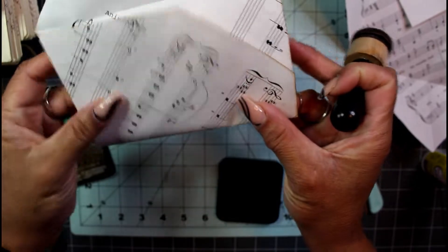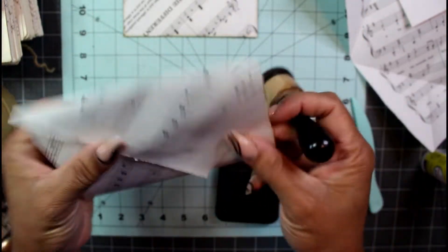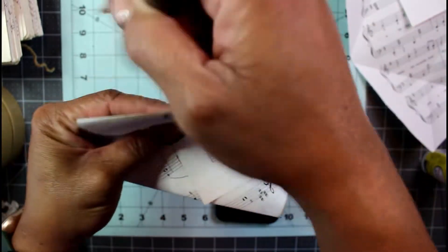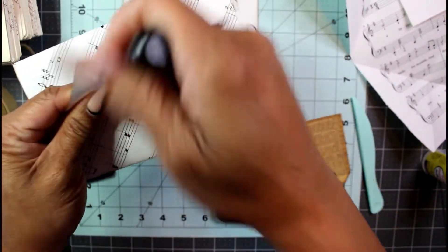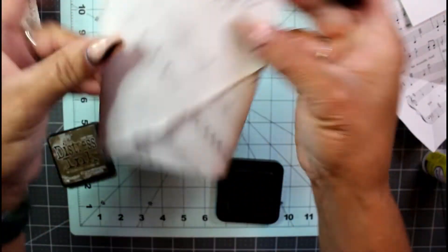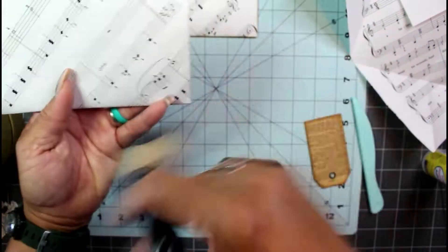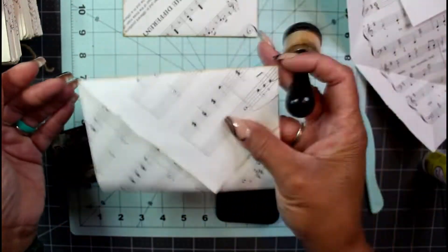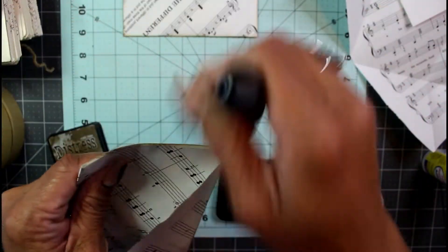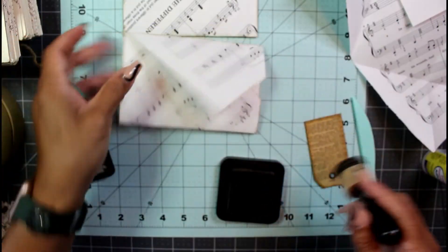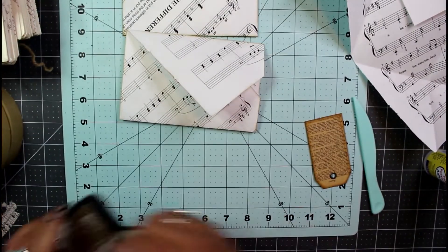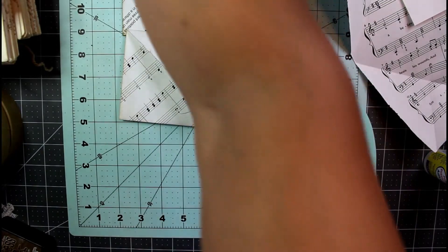When I fold this over, this side needs to be inked, and then my flap. And then of course the entire back side can be inked if this is a removable.